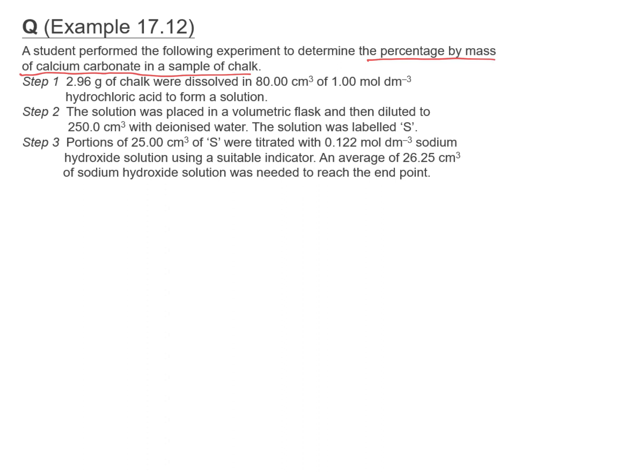So we have to find out the percentage by mass. The following steps help us to do that. Step 1: the chalk will dissolve in 80 cm³ of 1M HCl to form a solution. So 2.96 grams of chalk plus HCl — the information is 80 cm³ of 1M.